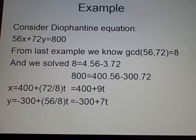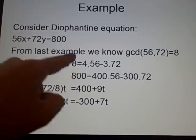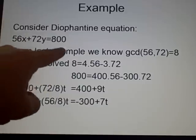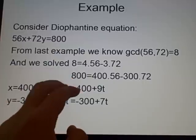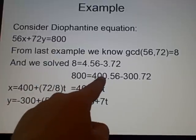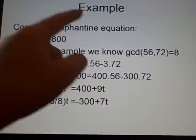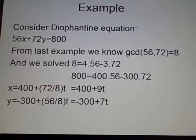Now, here, 8, the difference between 800 and 8 is 100. So, if we multiply both sides by 100, we get 800 here, 400 times 56 minus 300 times 72. So, they are our particular solutions.